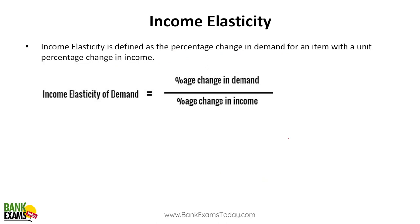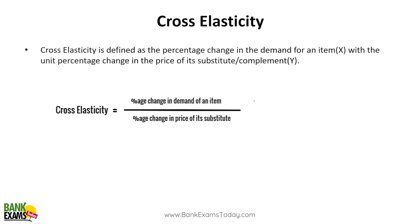Income elasticity of demand: as your income increases, you may buy some products more. For example, if you are buying three liters of milk at home, if your income increases you may be buying four liters. But after a point, you won't be buying that much more milk. So income elasticity of demand is percentage change in demand divided by percentage change in income — what is the effect of increase or decrease of income on the demand? That is income elasticity.